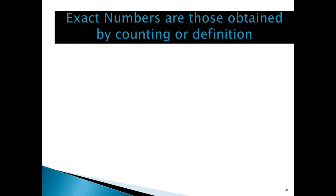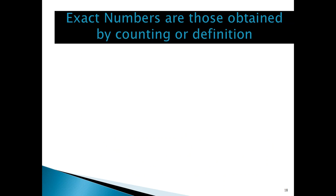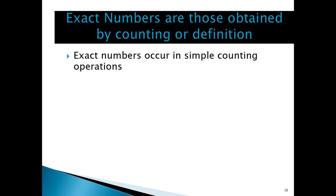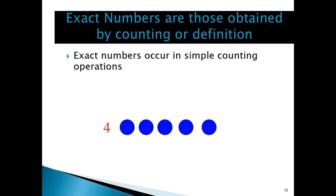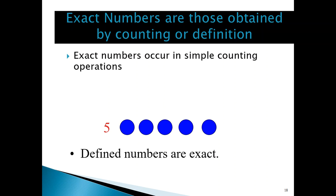Exact numbers are those numbers obtained by two ways: either by counting or by definition. For example, if you count five balls, that number five is an exact number because all we did was count — we did not have to use an instrument. The other type of exact numbers are obtained by definition. For example, we know that 12 inches is equal to one foot — that is a defined relationship, and therefore the 12 and the one are both exact numbers.